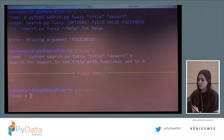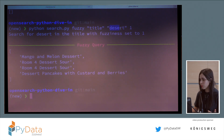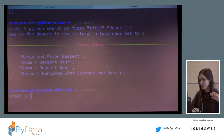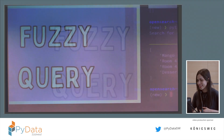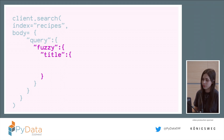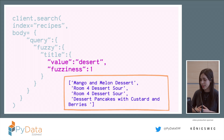If I change the fuzziness to one, the word 'dessert' will now map to 'desert' in the results. I only have an extra 'S', so a fuzziness of one is enough. To build this query, you replace the query type with 'fuzzy', give the field you're looking in, the value — 'desert', the dry one, not the sweet one — and set fuzziness to one. Now I can still get results.